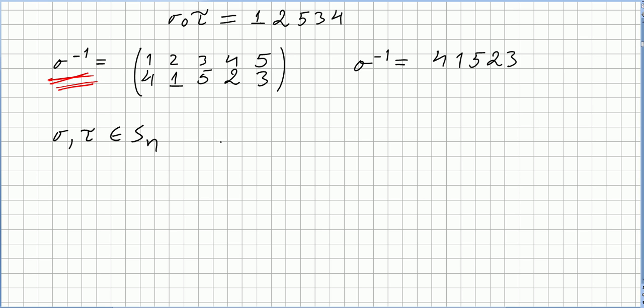So we can say that the sign of the transposition composed with the permutation is the same as the sign of the transposition times the sign of the permutation. Really easy. So the sign of the composition is the product of the sign of the one times the sign of the other.